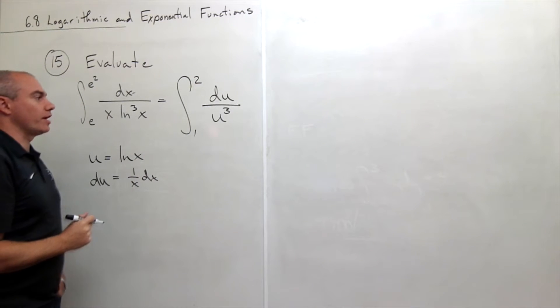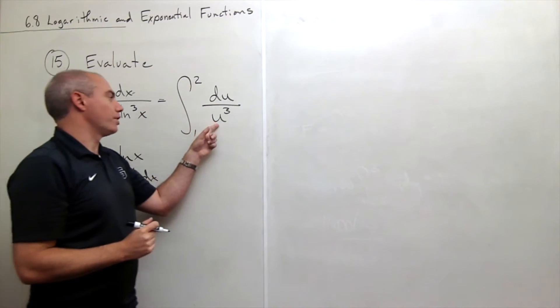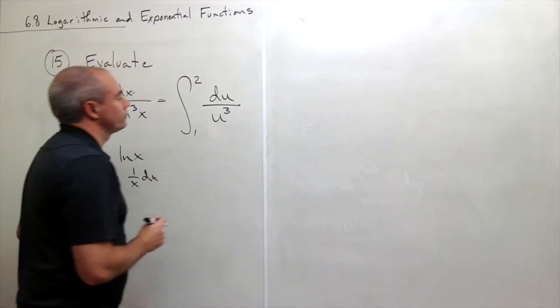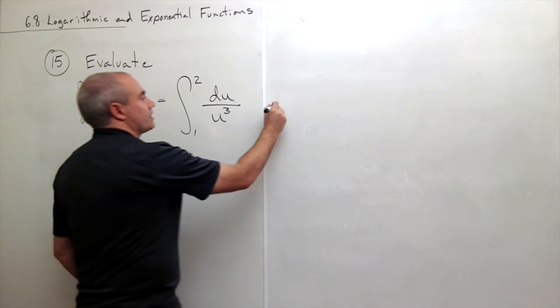So now we're integrating from 1 to 2 of 1 over u cubed du. Let's take an antiderivative.